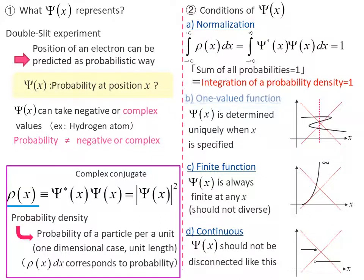The second is that it should be a one-valued function. Since the probability of the existence of an electron at a position x should be determined uniquely, the value of the wave function should also be determined uniquely. If the function itself has several values for x, it cannot determine the probability uniquely.